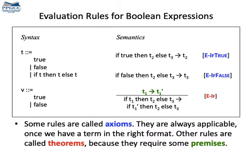Notice that some of these rules are always applicable once we have a term in the right format. These rules are called axioms and they are in blue above. So whenever we have if-true anything, there is always a rule that we can apply and this rule is called if-true. And there are rules that are theorems. We call them like this because they depend on some premise. The premise is this expression above the line, right here.